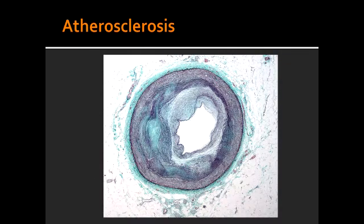Name some other causes of ischemic brain diseases. Other causes of ischemic brain disease include atherosclerosis, hemorrhagic stroke, ischemic stroke, and transient ischemic attack.